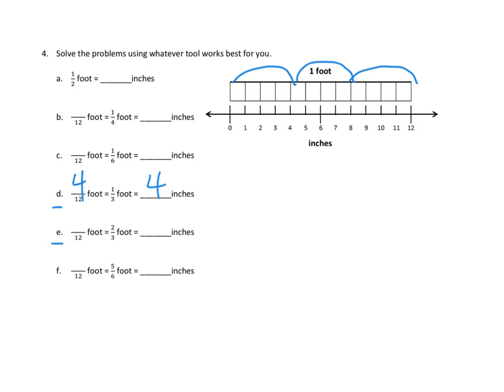Problem E is very similar, right? It asks, hey, what about two-thirds of a foot? Oh, this is really convenient because we've already drawn our thirds. So what is two-thirds of a foot? Two-thirds of the foot is eight out of the twelve pieces, and how many inches is it? It's eight: one, two, three, four, five, six, seven, eight inches. Beautiful.